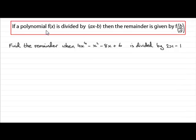That is, if you've got a polynomial f of x, and we're going to call this our f of x in a moment, and if it's divided by ax minus b, which is this value here, then the remainder is given by f of b over a.